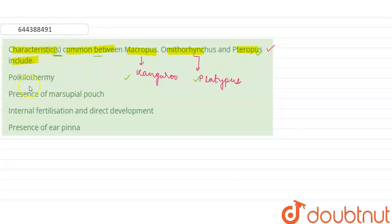So if we see the first property, that is poikilothermy, it is not common for kangaroo because it shows homeothermy property. That means they are homeotherms in nature, so this will not be the correct option.